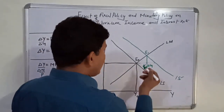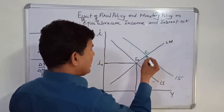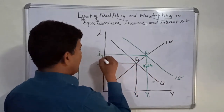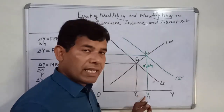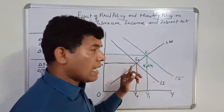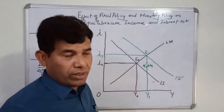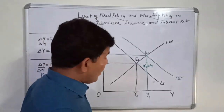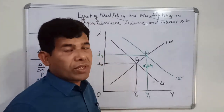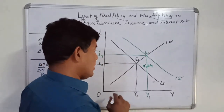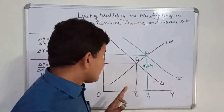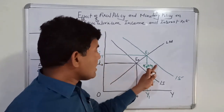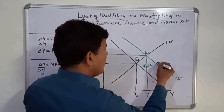But simultaneously, what happens in the money market is that the rate of interest also rises. When government expenditure rises, income rises, but simultaneously you find that interest rate also rises. Why does interest rate rise? The interest rate rises primarily because if interest rate does not rise and remains at I0, the rise in income would be something like E0 to point A.